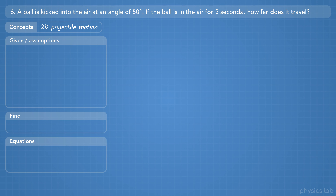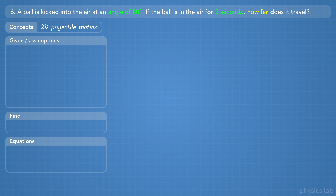A ball is kicked into the air at an angle of 50 degrees. If the ball is in the air for 3 seconds, how far does it travel? Let's read that again and think about how to solve this. A ball is kicked into the air at an angle of 50 degrees. If the ball is in the air for 3 seconds, how far does it travel?